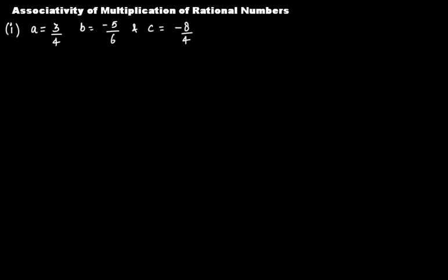So far we have discussed that addition is associative for rational numbers, and subtraction is not associative for rational numbers. The video links to both those lectures you will find in the description box below — please watch them. In this video, let's talk about whether multiplication is associative for rational numbers or not.